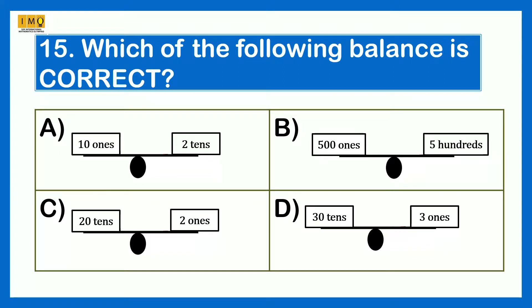Which of the following balances is correct? Option A: 10 ones and 2 tens — 10 ones is 10, 2 tens is 20, not equal. Option B: 5 hundred ones and 5 hundreds — both equal 500, so equal. Option C: 20 tens and 2 ones — 200 vs 2, not equal. Option D: 30 tens and 3 ones — 300 vs 3, not equal. So the correct answer is Option B.